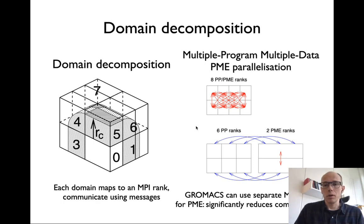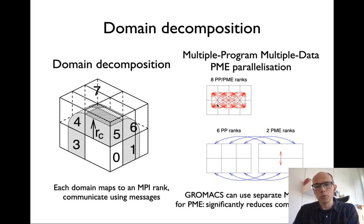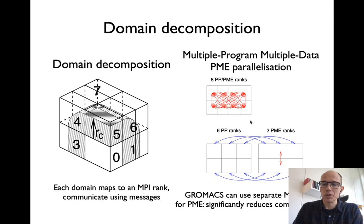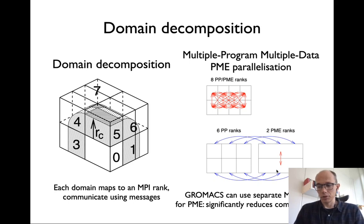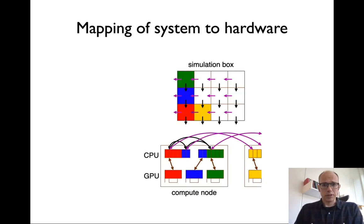For parallelizing PME, GROMACS supports multiple-program multiple-data (MPMD) parallelization. Normally each MPI rank runs the same code in order, so the PME all-to-all communication across all ranks is expensive. GROMACS has the option to run PME on separate dedicated ranks — typically about a quarter of the load — so you might dedicate 2 MPI ranks to PME and 6 to the rest. Coordinates are sent to the PME ranks, only those 2 ranks communicate for PME, then forces are sent back, significantly reducing communication overhead.